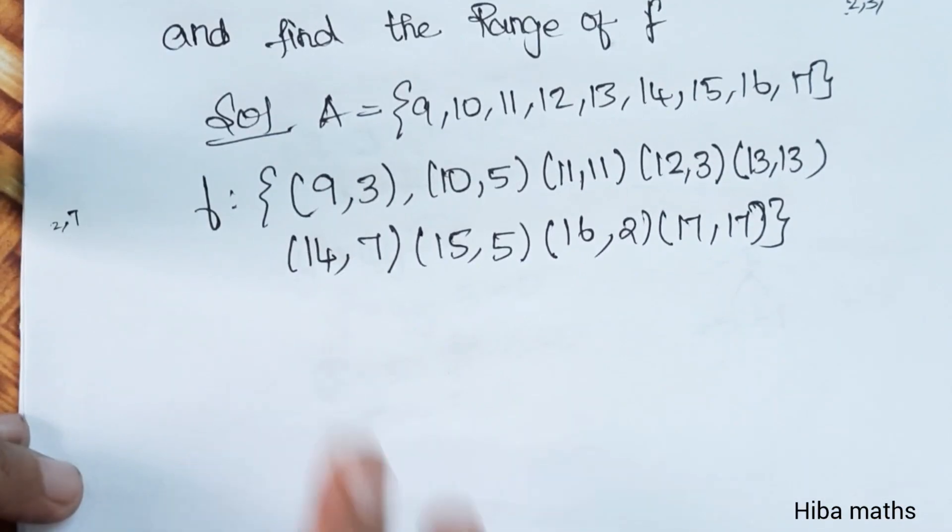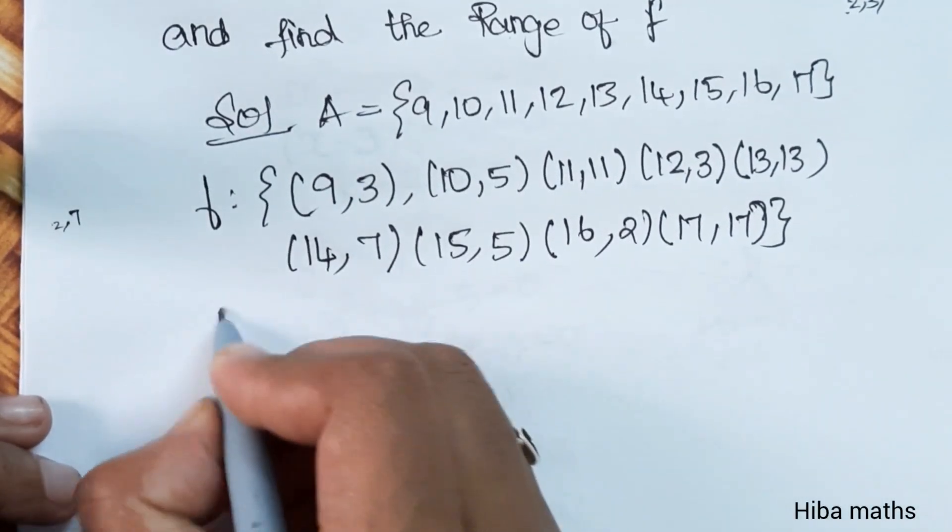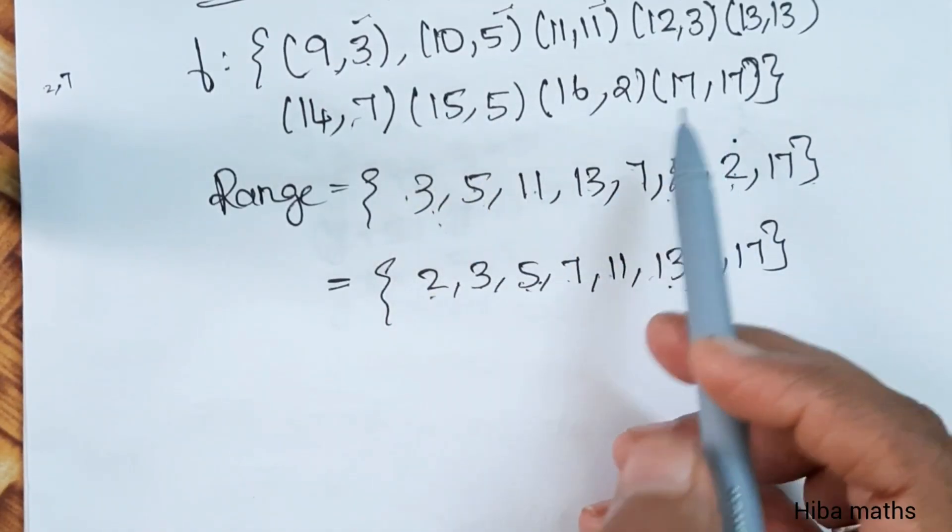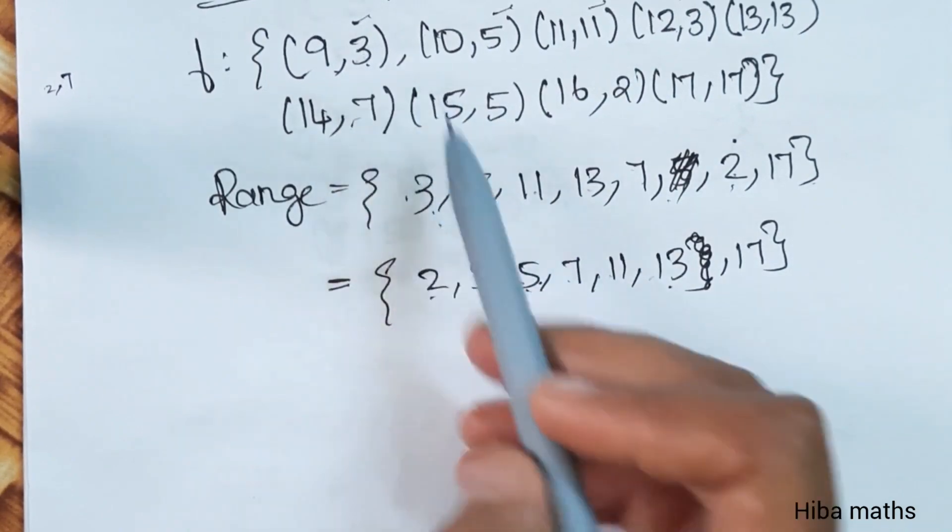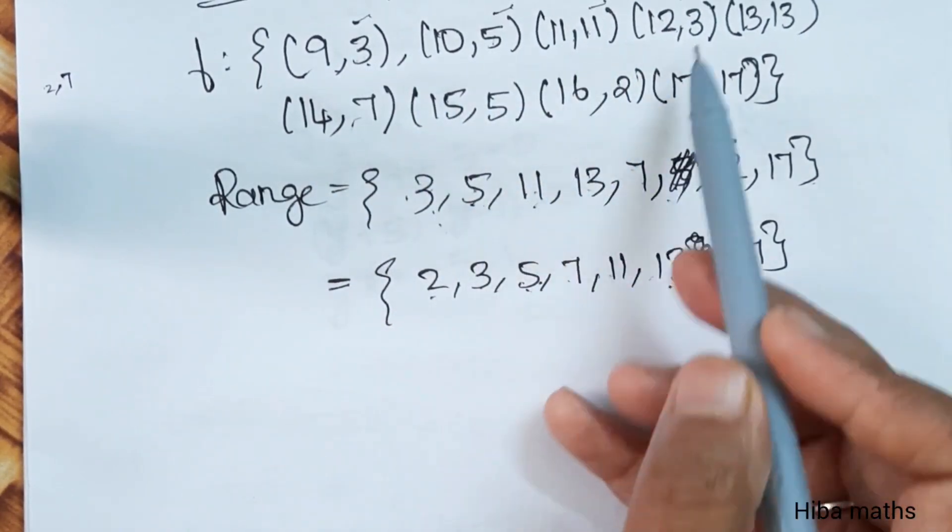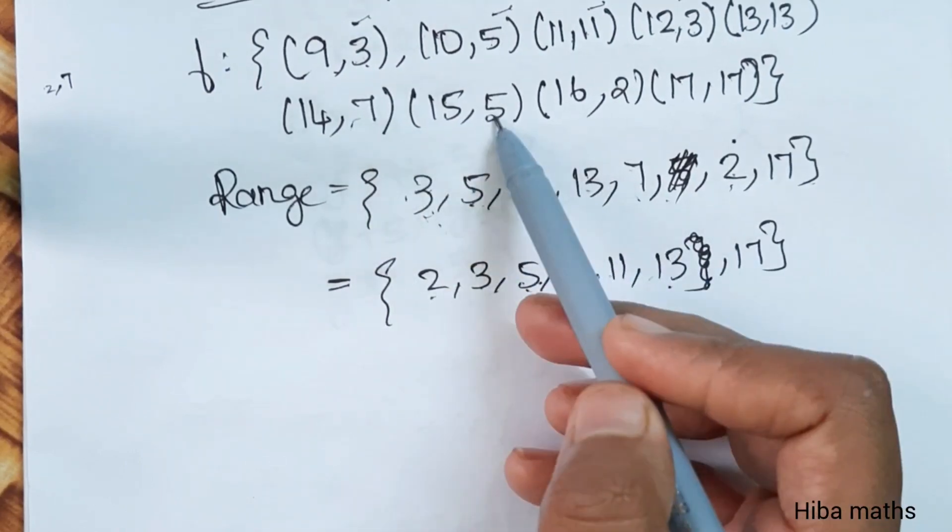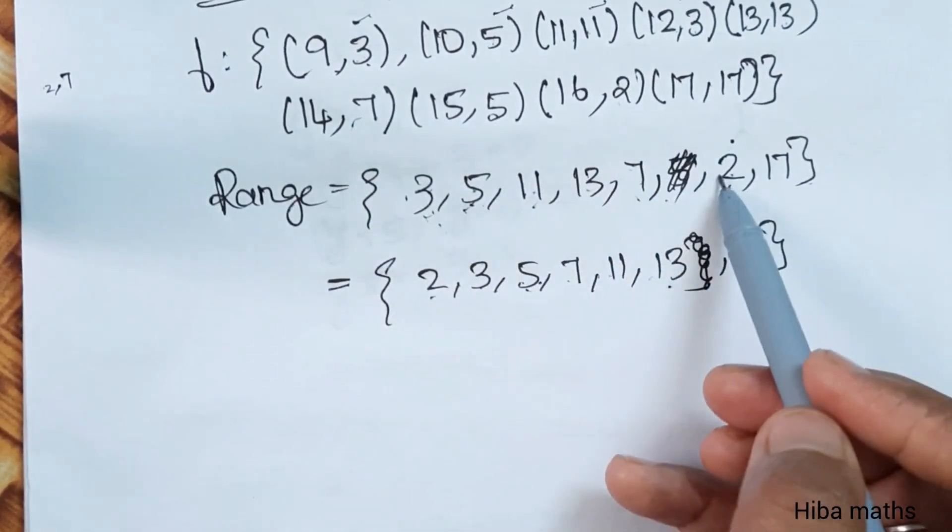The function as ordered pairs. The range is the values: if you have 3, 5, 11, 3 again, so 1 is the same, 2. Then we have 3, 5, 11, 13, 17. The range equals 2, 3, 5, 7, 11, 13, 17.